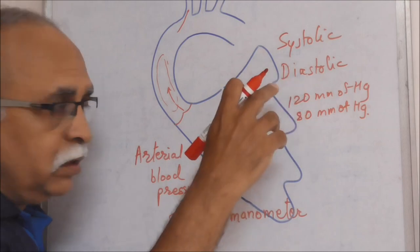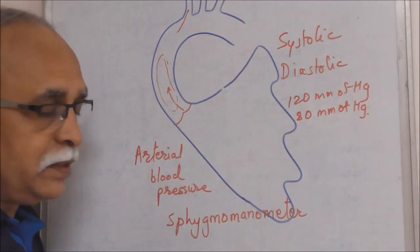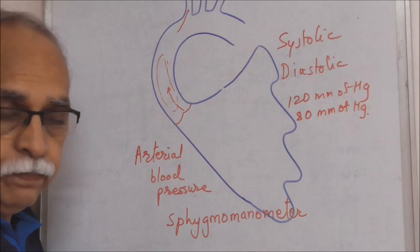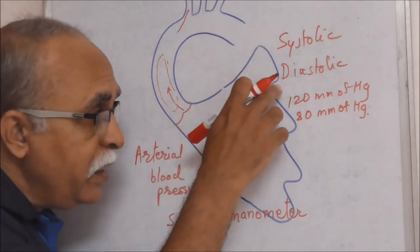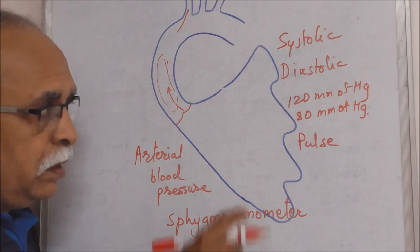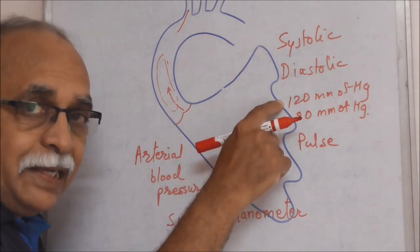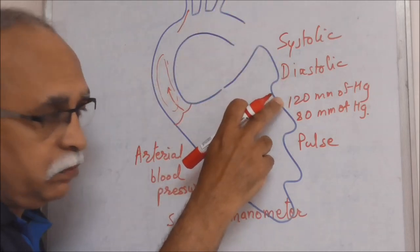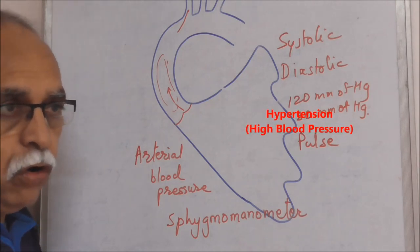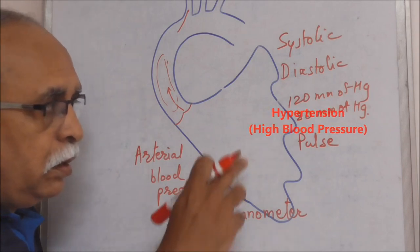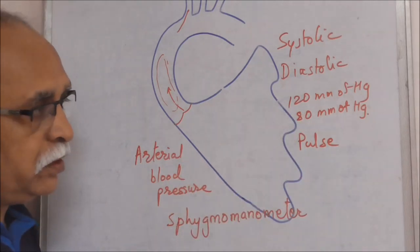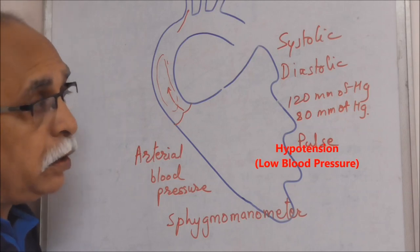These two standard or ideal figures are found in a healthy person when all other parameters are also normal and standard. A variation in these figures is possible under specific circumstances. Systolic blood pressure rising above 150 with a subsequent rise in diastolic is called hypertension or high blood pressure. Systolic blood pressure falling below 100 with a subsequent fall in diastolic is called hypotension or low blood pressure.